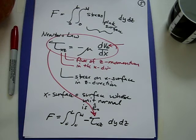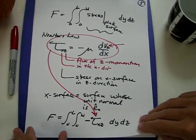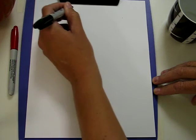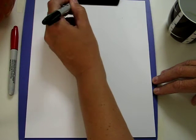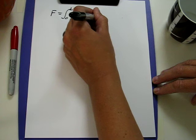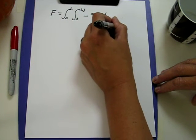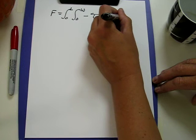From here and with the solution for the velocity field, we can now calculate this force. So the force is the integral from 0 to L, the integral from 0 to w of minus tau_xz evaluated at the surface dy dz.